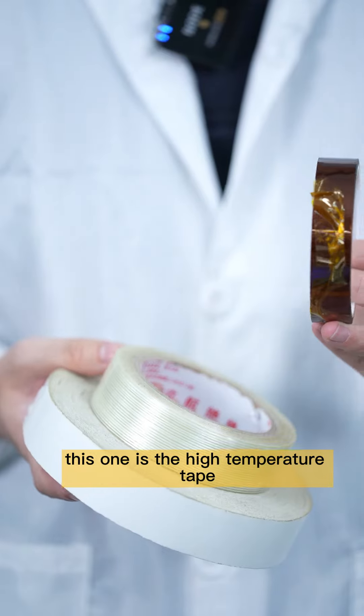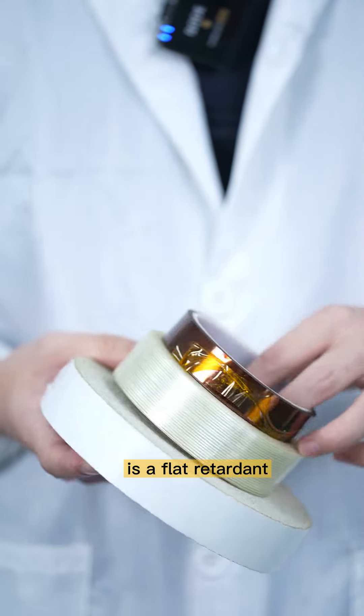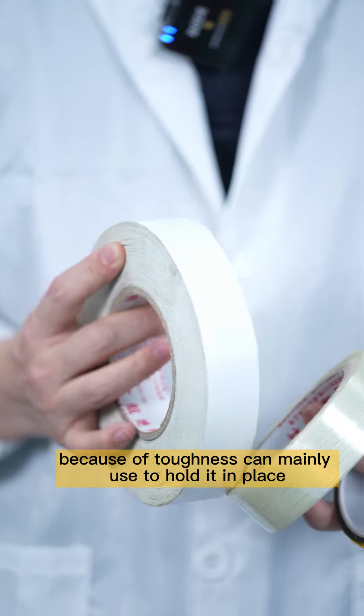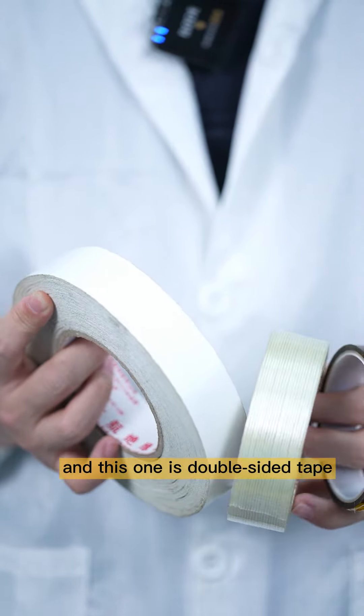These are the different tabs. This one is the high-temperature tab, it's flame retardant. And the fiber tab, because of its toughness, can mainly be used to hold it in place. This one is the double-sided tab.